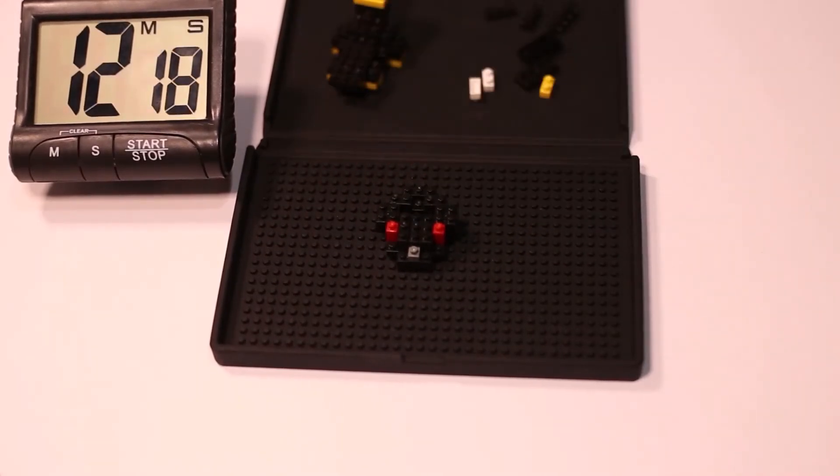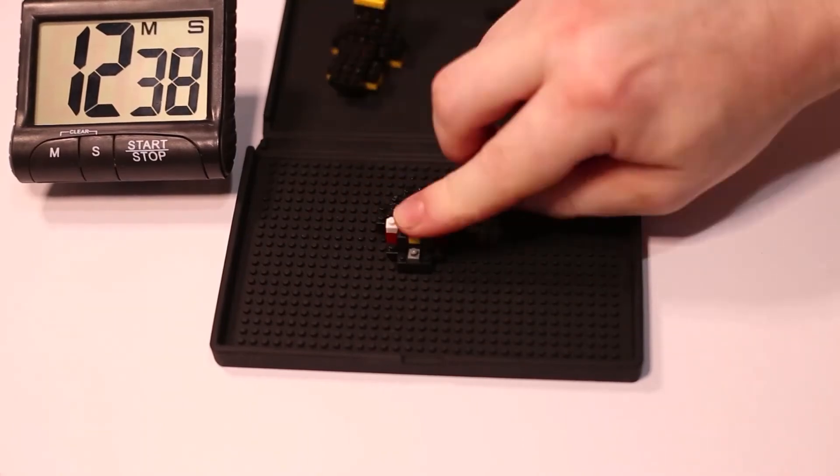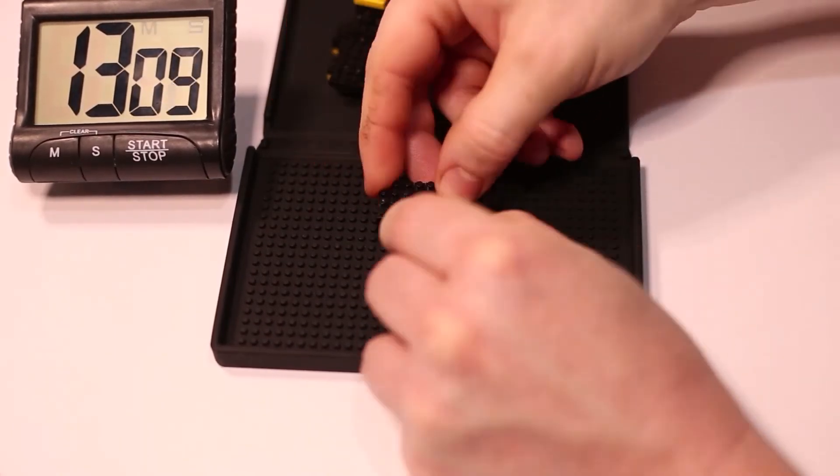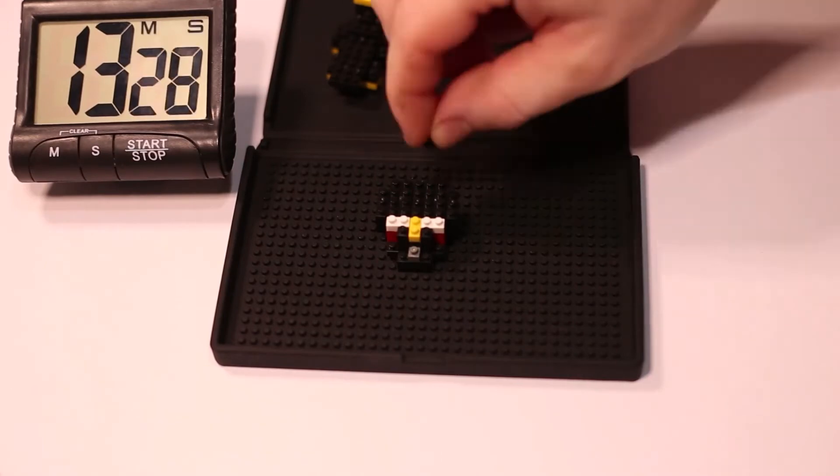It took me 19 minutes and 12 seconds, my fastest build in the Eeveelution series so far. This set cost me $13 Australian online from a website called Small Forge.